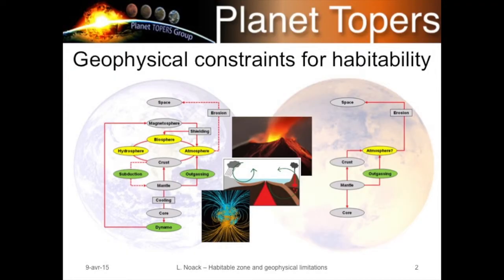On Mars, which is a non-habitable planet compared to Earth, there is no plate tectonics, only very limited outgassing to the atmosphere, no dynamo, and no shielding of the biosphere or atmosphere. This suggests that geophysical factors — volcanism, plate tectonics, and the magnetic dynamo — influence habitability, at least on Earth.